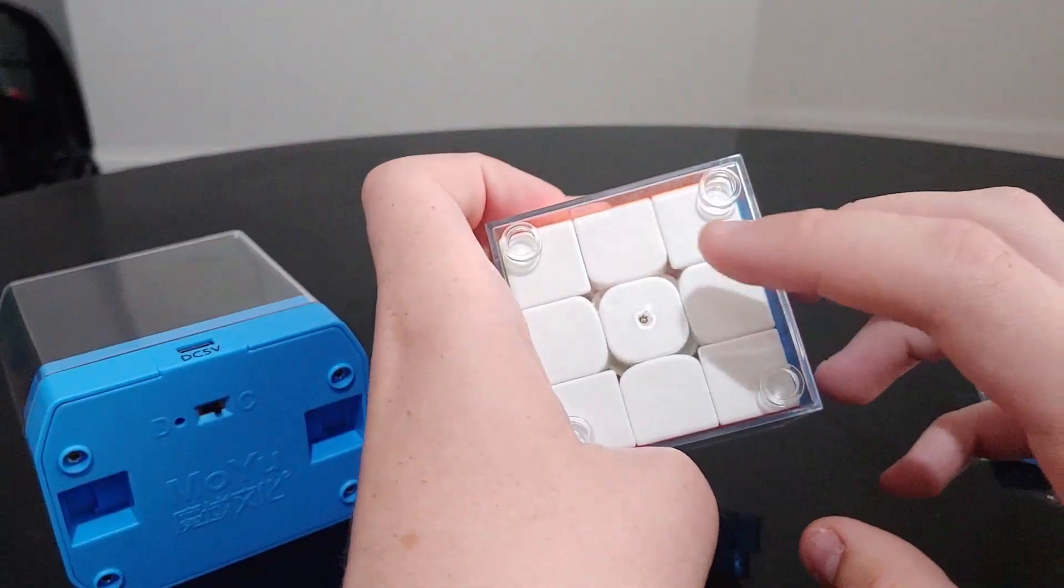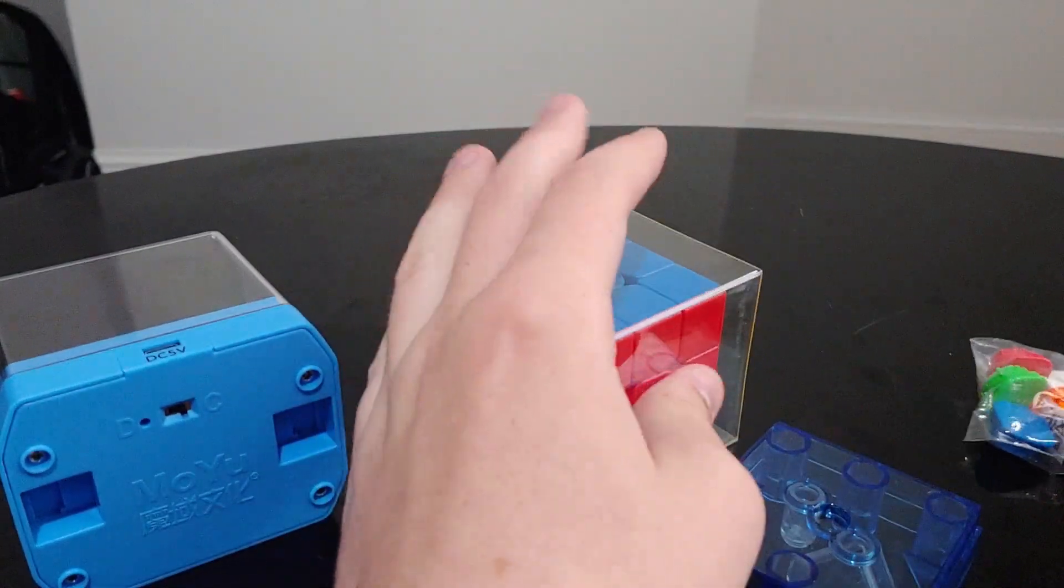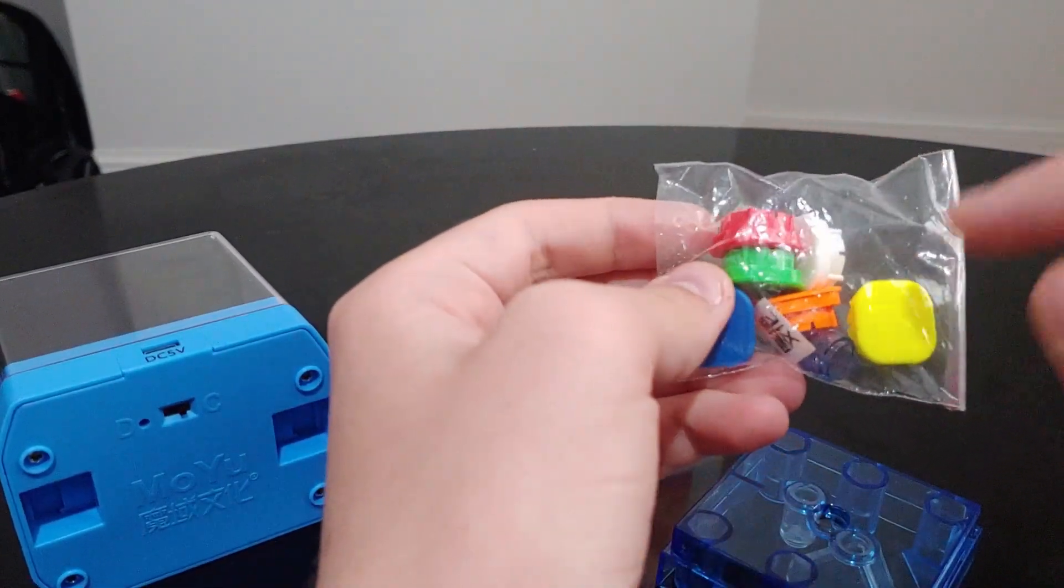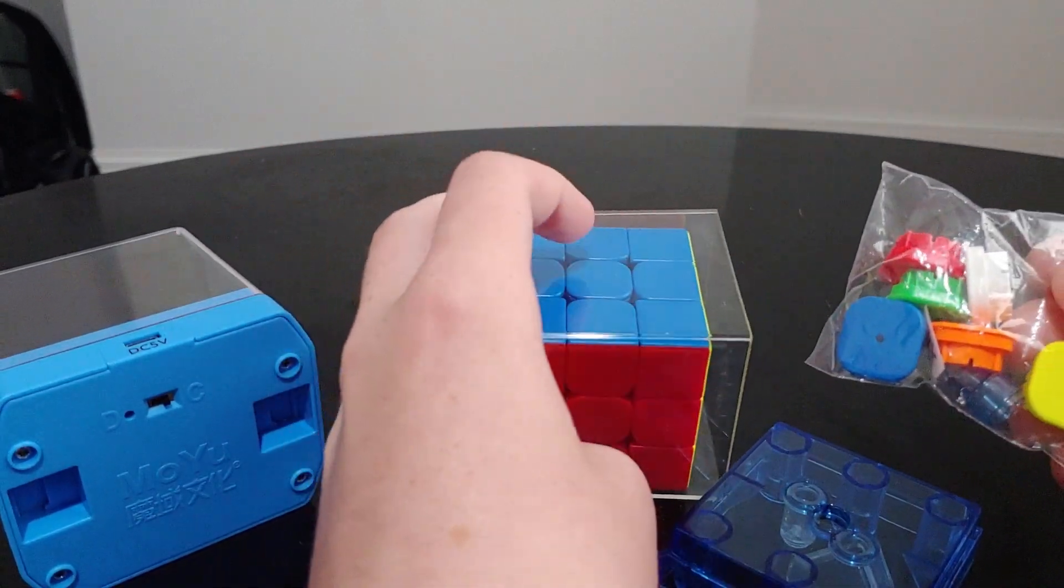You may have noticed that the cube has holes in the white center cap, and there's also one in yellow. Out of the box, all of the center caps have holes, but it comes with an extra set that are solid, and I've replaced all of them except white and yellow.